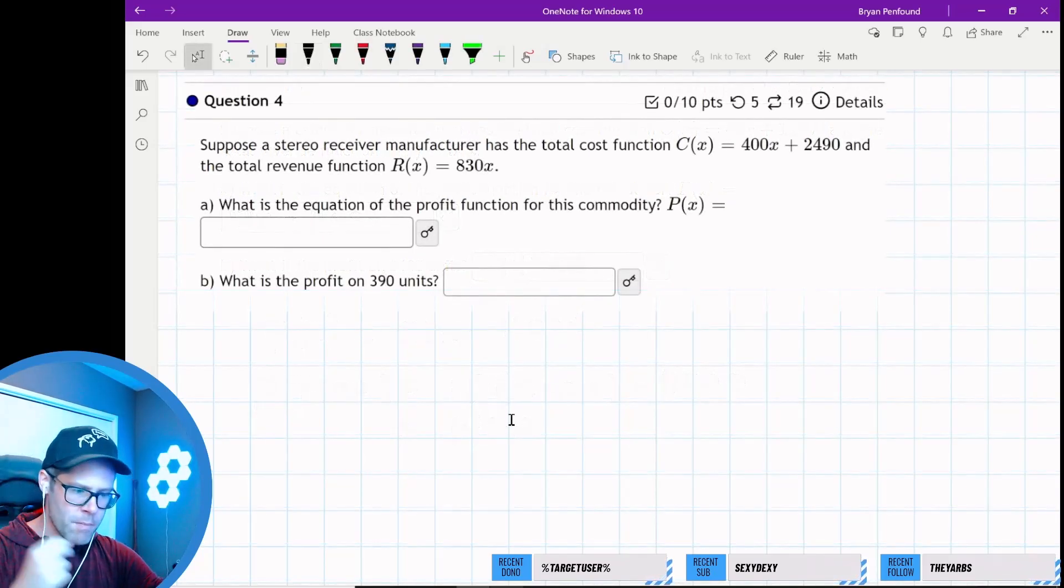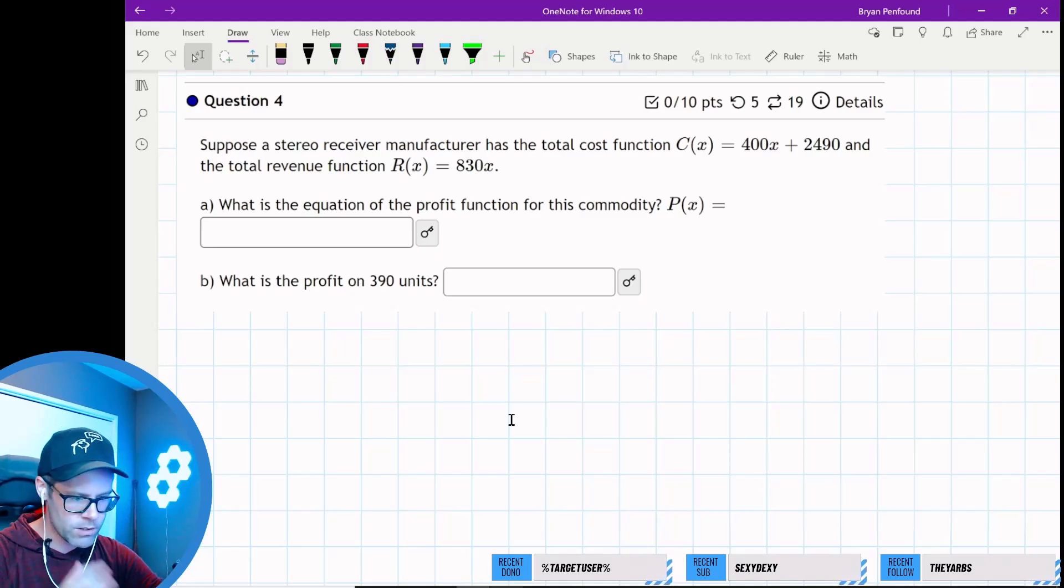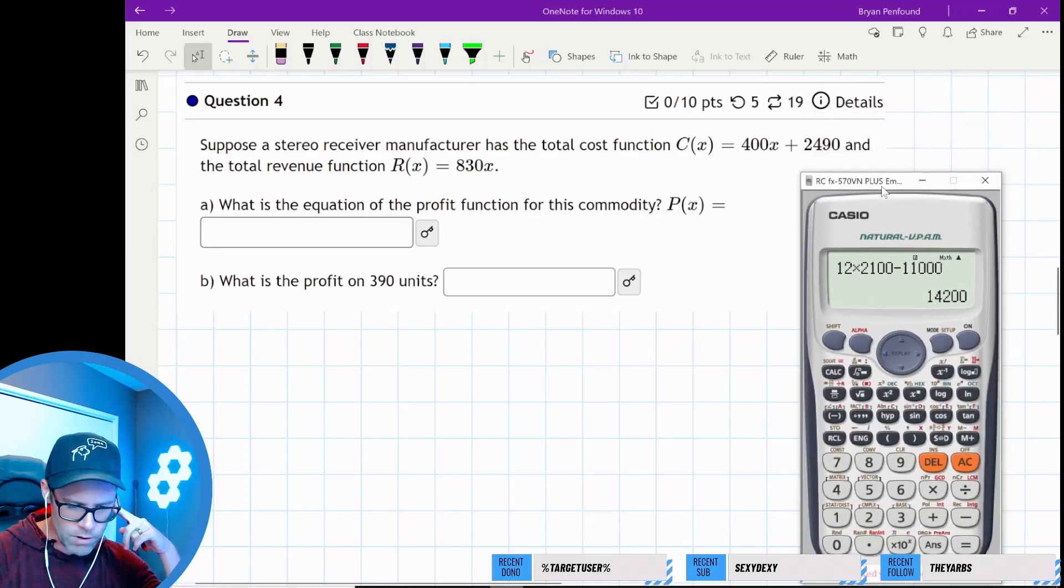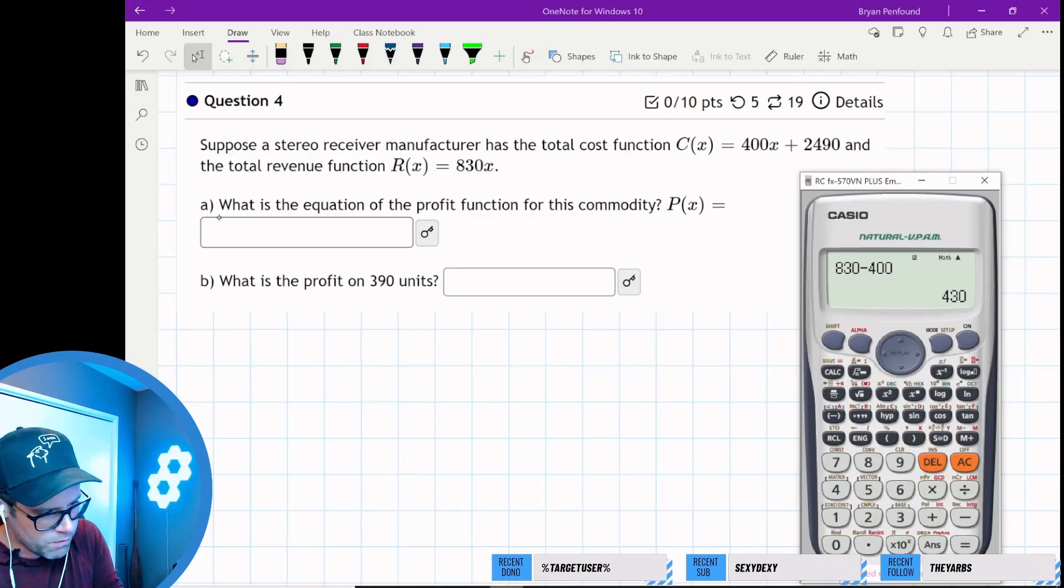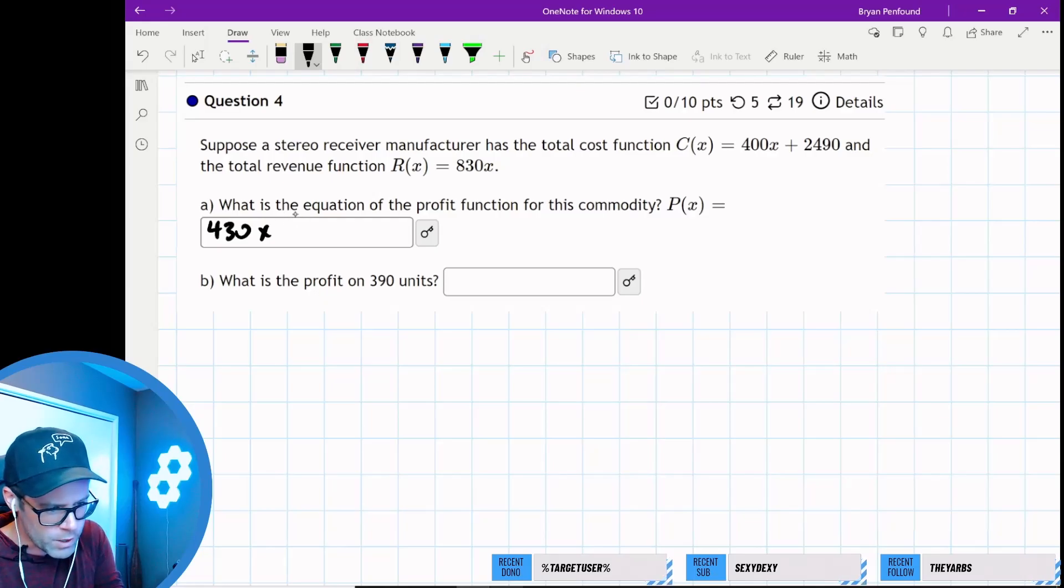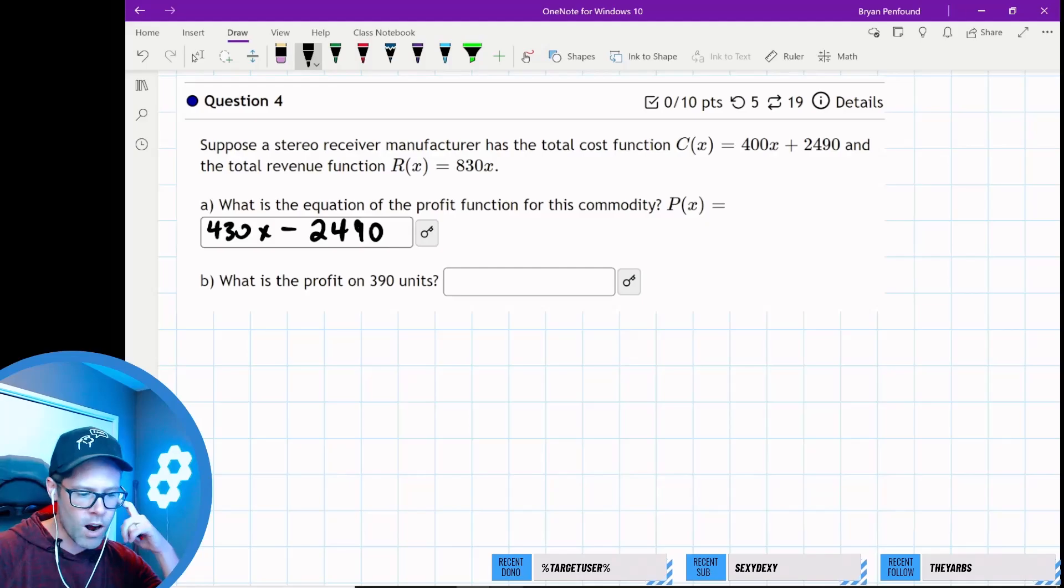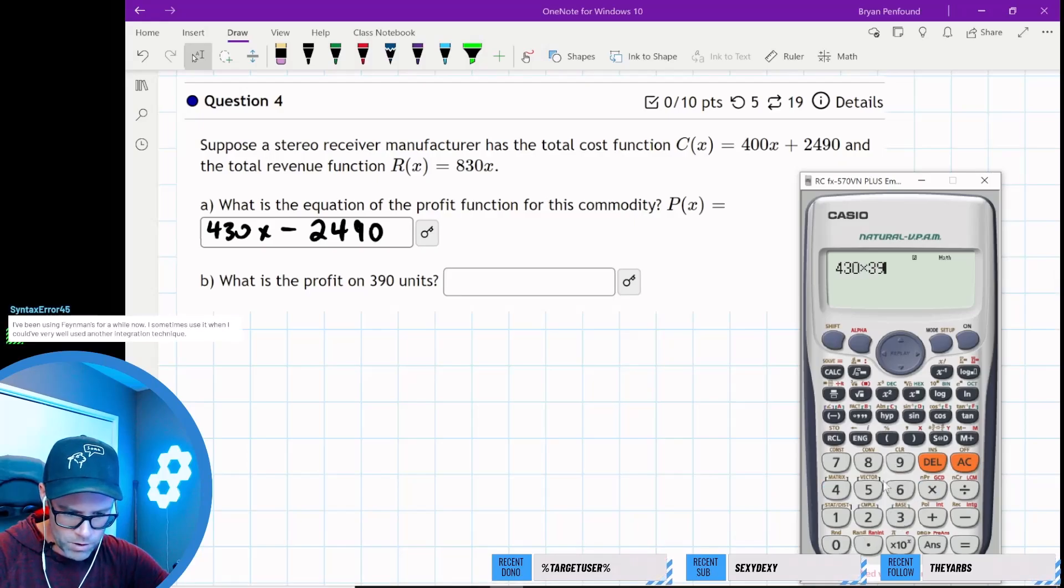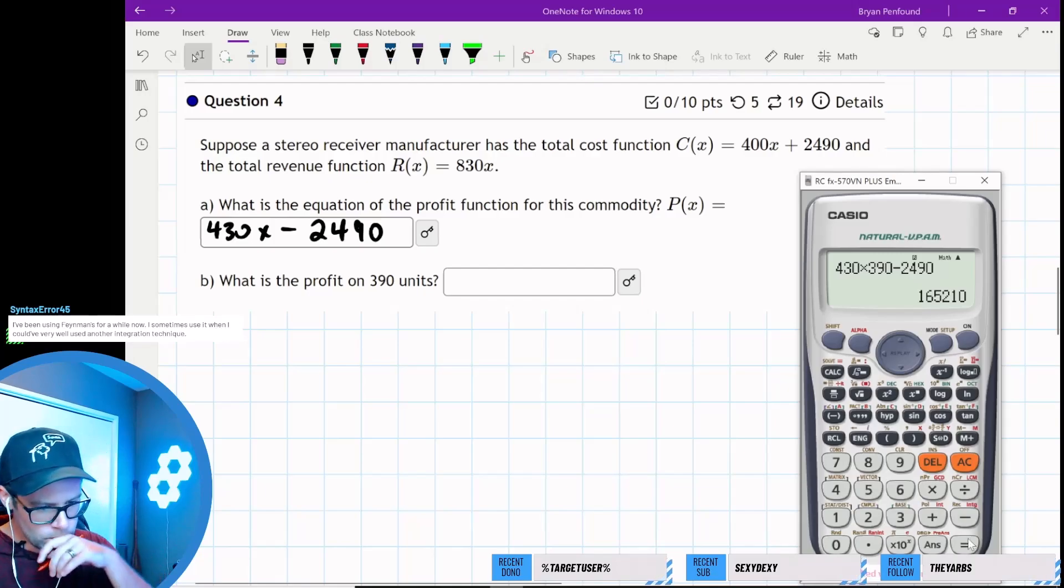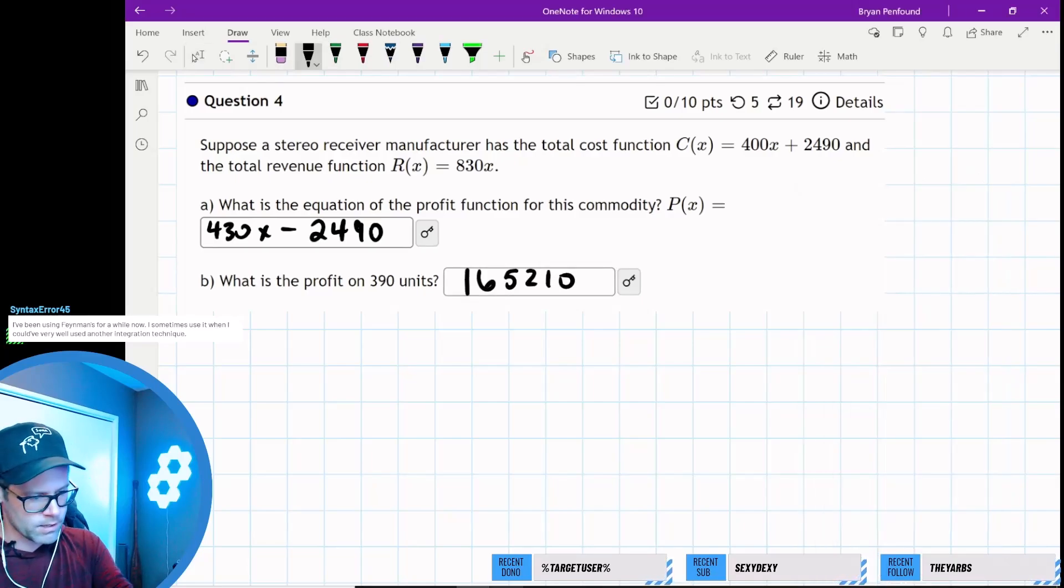Question 4: suppose a stereo receiver manufacturer has this total cost function and total revenue. Similar story—revenue minus cost. We take 830 and subtract 400, which is 430x, then subtract off 2490. That's our profit function. The profit on 390 units is 430 times 390 minus 2490, which is $165,210.